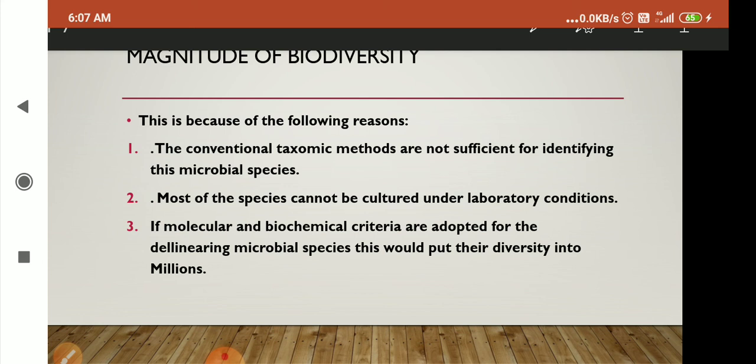If we apply Robert May's global estimate that only 22% of species have been recorded so far, then India probably has more than 1,000,000 species of plants and 3,000,000 species of animals yet to be discovered and described.